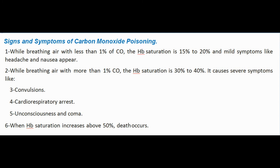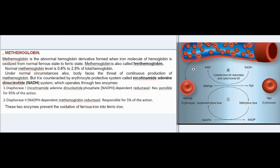Signs and symptoms of carbon monoxide poisoning: (1) while breathing air with less than 1% CO, Hb saturation is 15–20% and mild symptoms like headache and nausea appear; (2) while breathing air with more than 1% CO, Hb saturation is 30–40%, causing severe symptoms such as convulsions, cardiorespiratory arrest, and unconsciousness and coma.